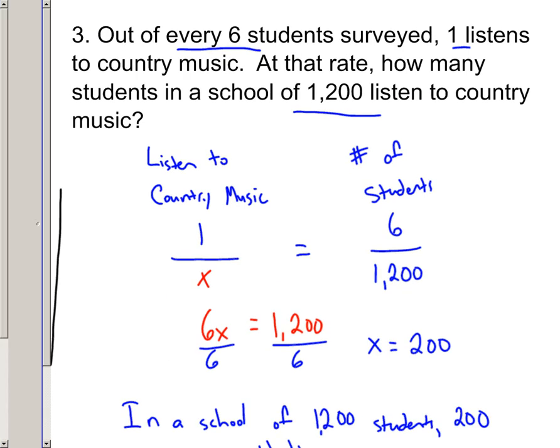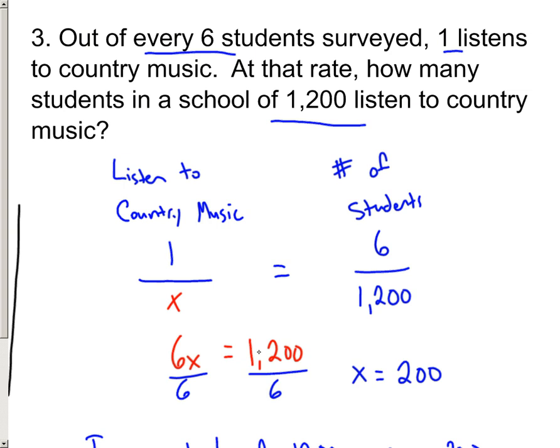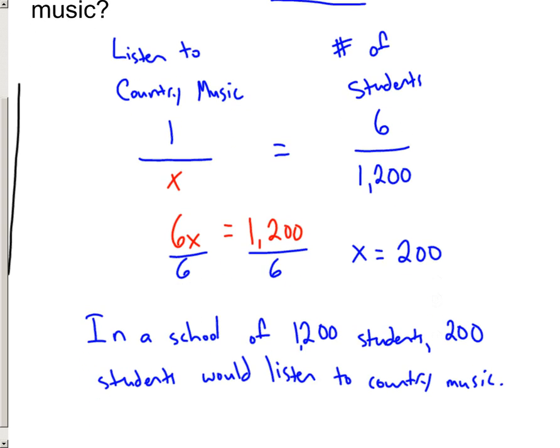So, remember, when you go to set up a proportion, label each side of it. Like, this is listening to country music. So, this is the one person that listened to country music. This is the unknown number of people that would listen to country music. This was joining with the first proportion. 1 to 6 people. 1 out of every 6 people listened to country music. This is the total number of students. And they were asking about the 1,200 of the school. That lets you set up the proportion. So, that way, then you can cross multiply, solve for the unknown number, and then always restate your answer.